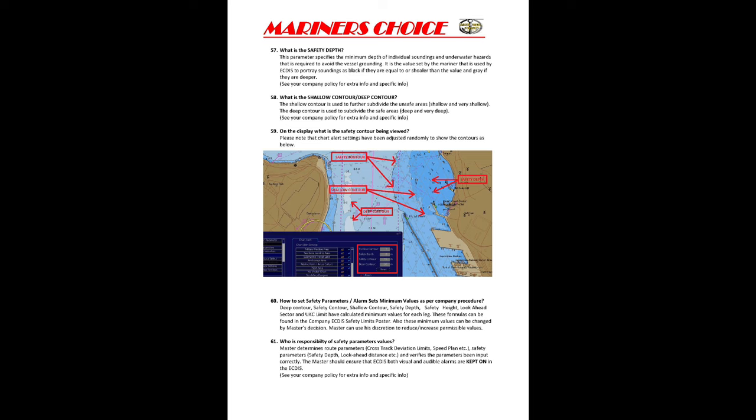To illustrate with an example: safety depth is 7.18 meters — below this you cannot go. Safety contour is the 20-meter line joining the boundary. Shallow contour is the 10-meter contour. Deep contour is shown with the white color screen — that is the deepest contour and is always safe for navigation. You can see how the color codes change: blue, dark blue, light blue. In another example: shallow contour 7m, safety depth 8m, safety contour 15m, deep contour 30m — all are clearly segregated on screen.